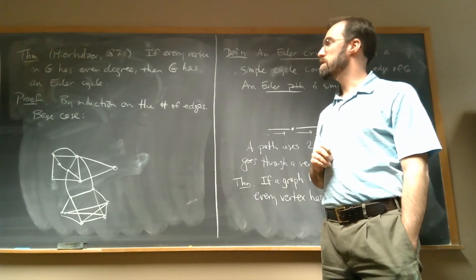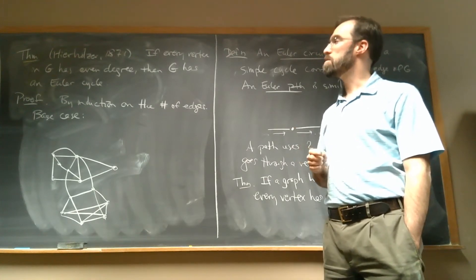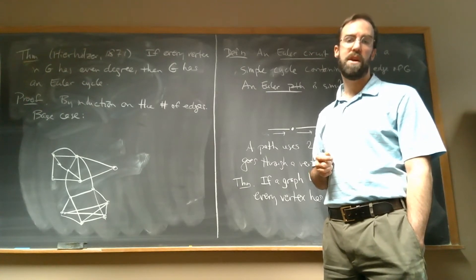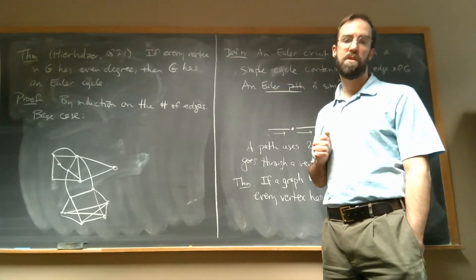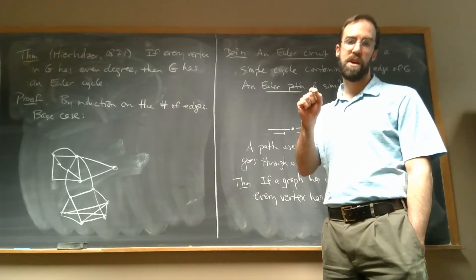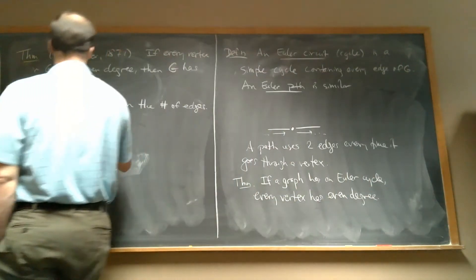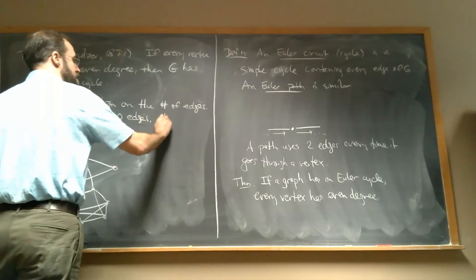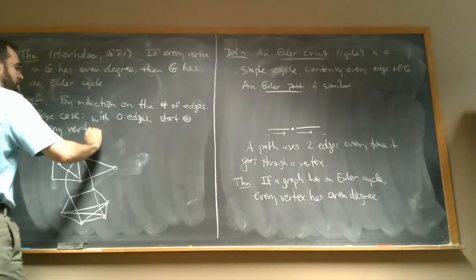If there are zero edges, then every vertex has degree zero, which is even. And there is an Euler cycle — it's a little weird, but it's basically the path that doesn't have any edges. Since there are no edges, we can have a cycle that goes through all the edges by just starting at a vertex and not going anywhere. We end up where we started, and that counts. So if there are zero edges, start at any vertex and stay there.